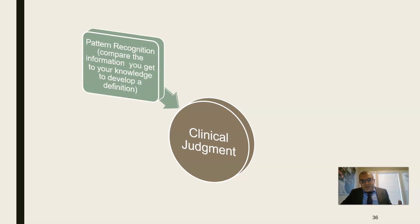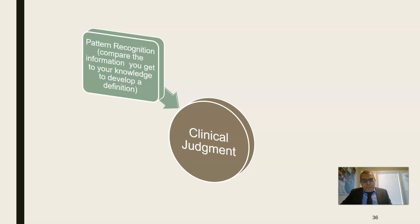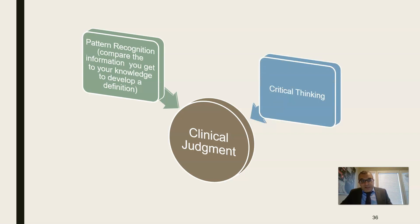The first is pattern recognition — comparing the information you get to your knowledge to develop a definition of what's happening. Hemoglobin A1c is a well-known marker for glucose control, so generally if a patient has a high hemoglobin A1c, we say poor glucose control. Knowing these patterns from what you learned in school and your clinical experience allows you to make a definition about the condition the patient is having.